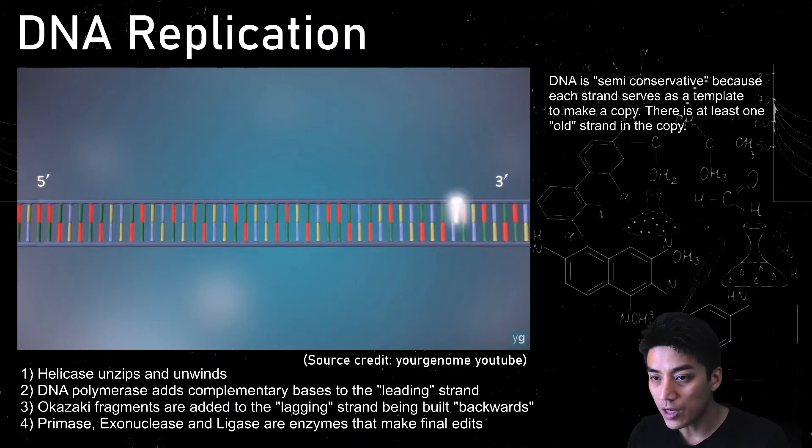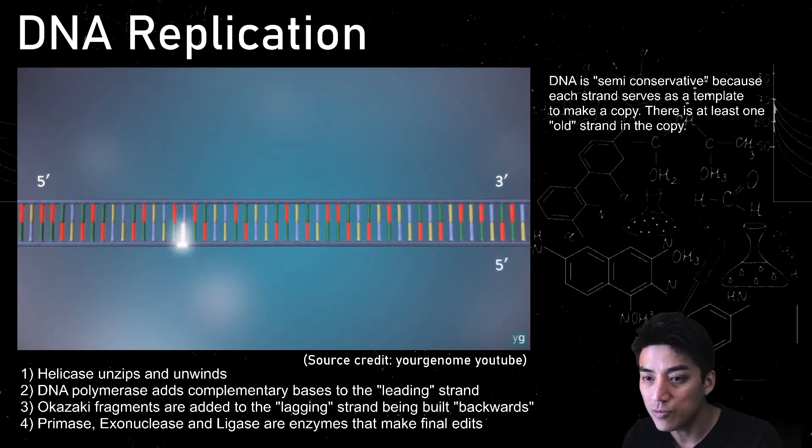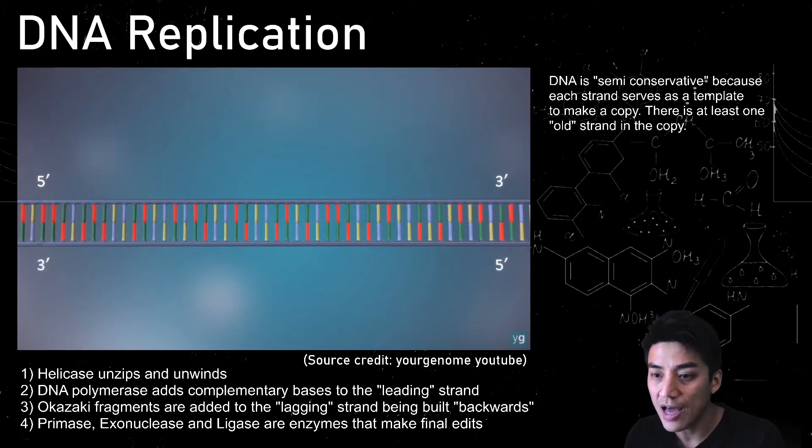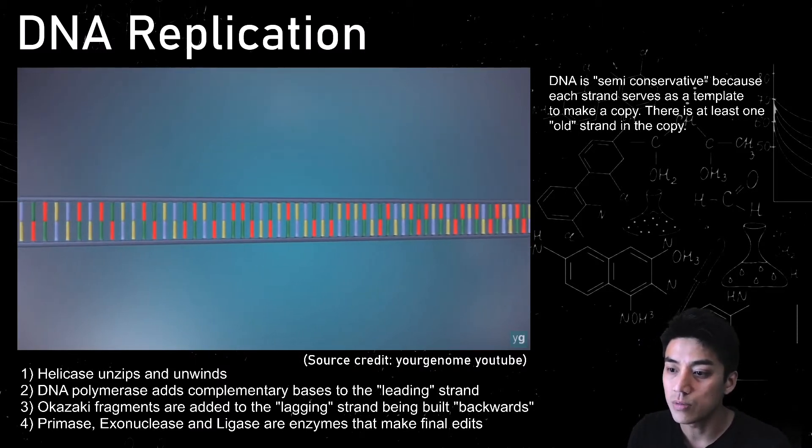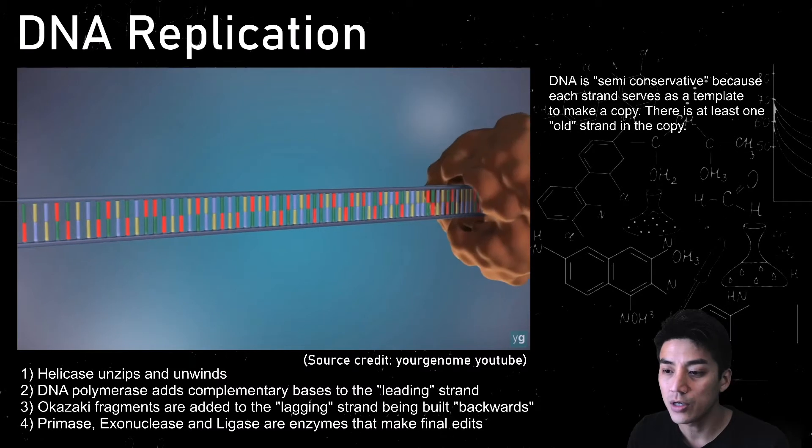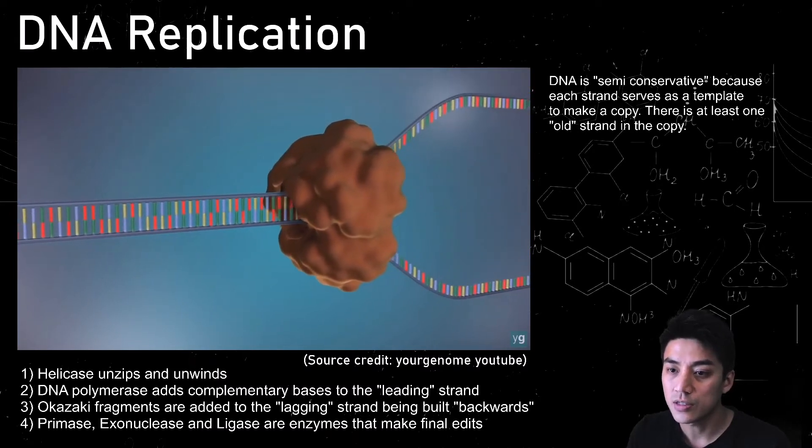And there's a few enzymes that all work together to make sure DNA can copy itself. But what the video is pointing out is you have a strand which goes in the five prime to three prime direction, and then a lagging strand, which is backwards, which goes three prime to five prime. So let's see all the steps here.